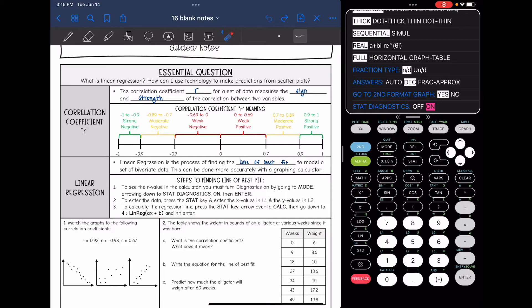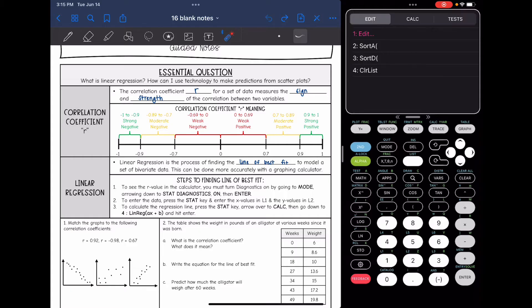After we make sure that the stat diagnostics are on, the next thing we're going to do is enter the data, which we will go to the stat key to do that, and then we will hit enter. In L1 is where you'll put your x values. L2 is where you'll put your y values. And then you will do stat, arrow over to calc, and go down to 4, and hit enter to calculate that line of best fit equation and the correlation coefficient.